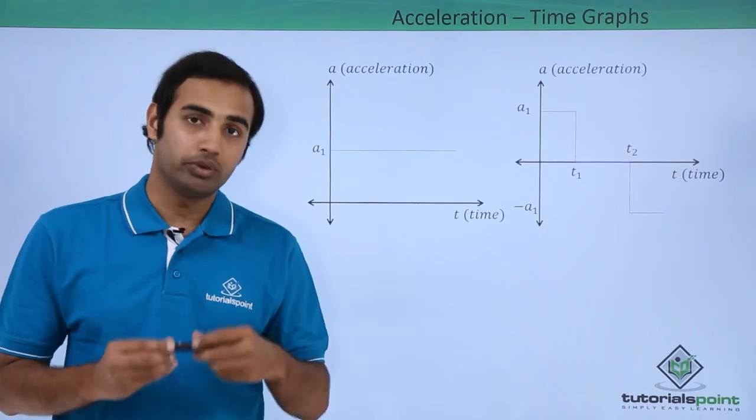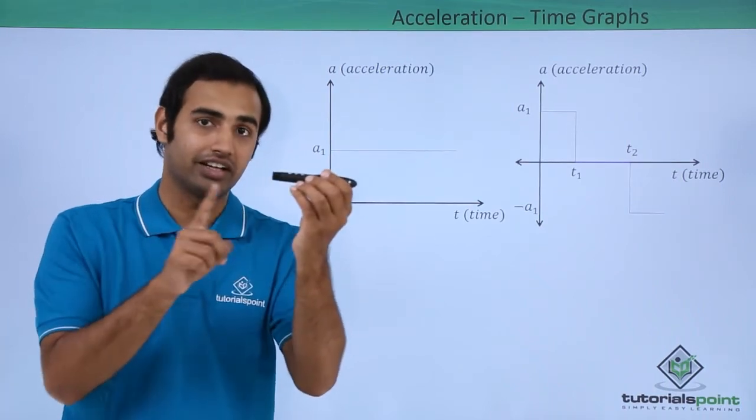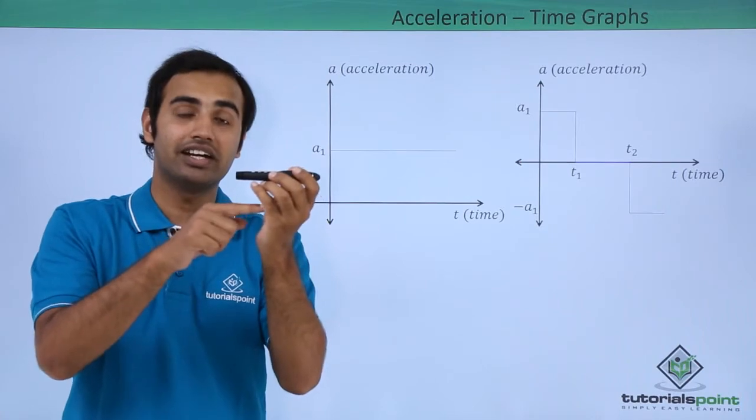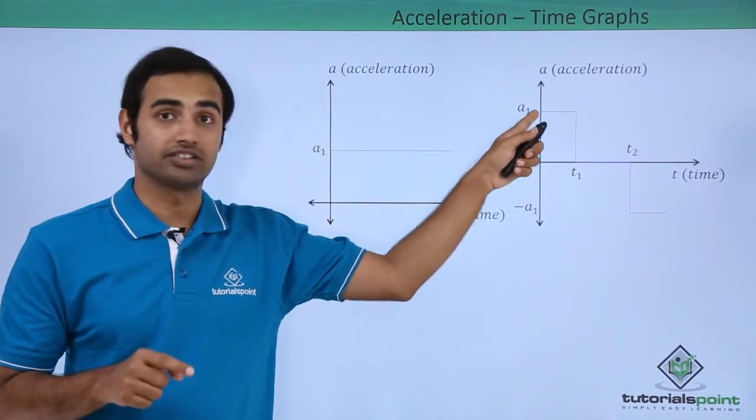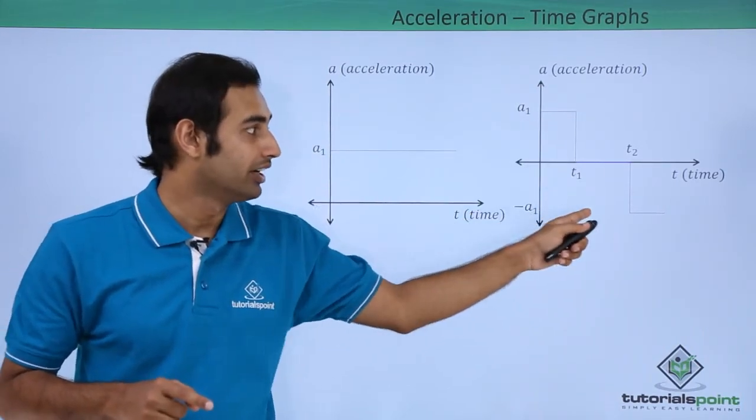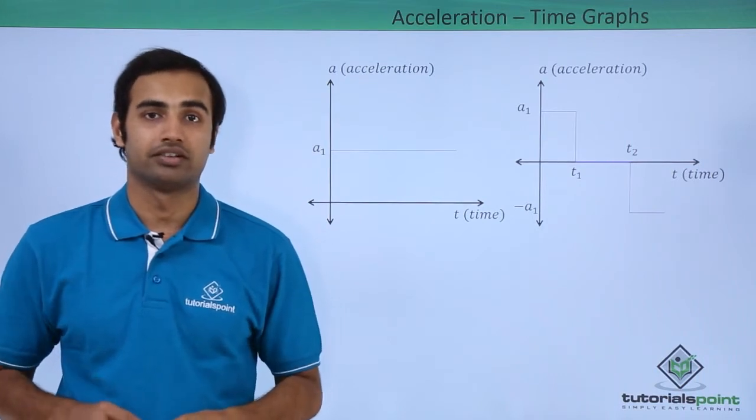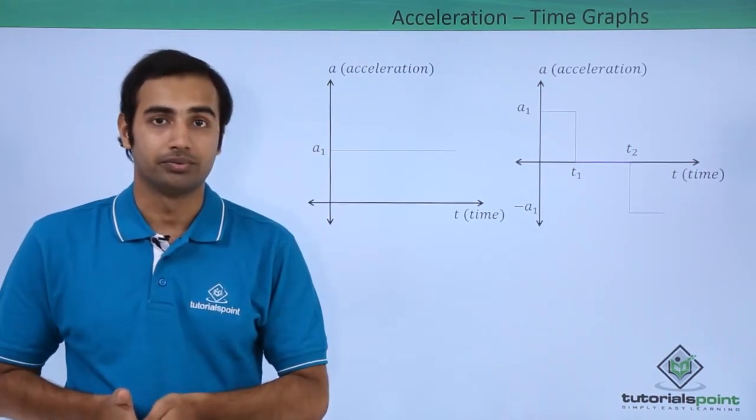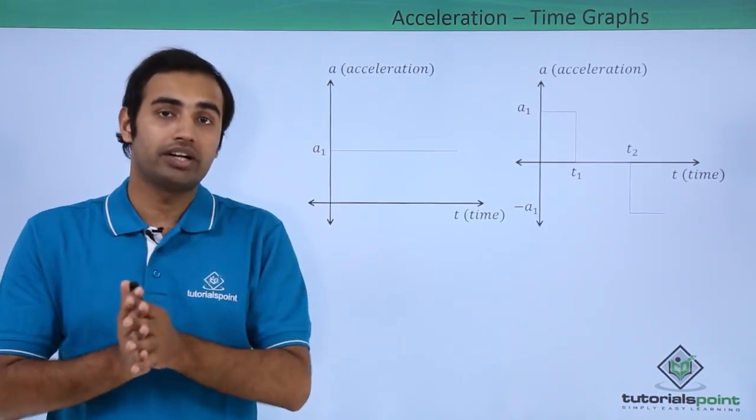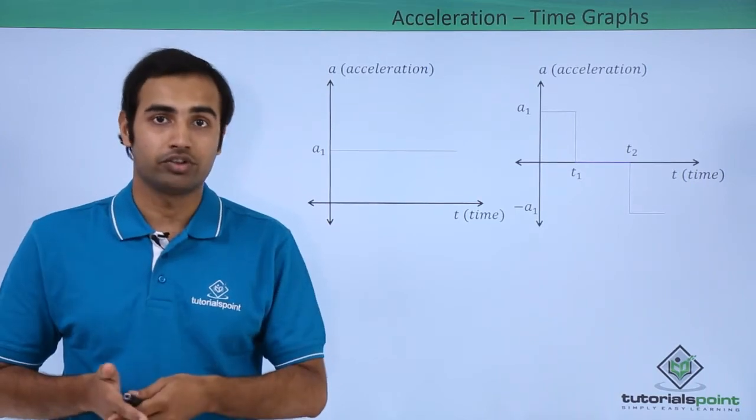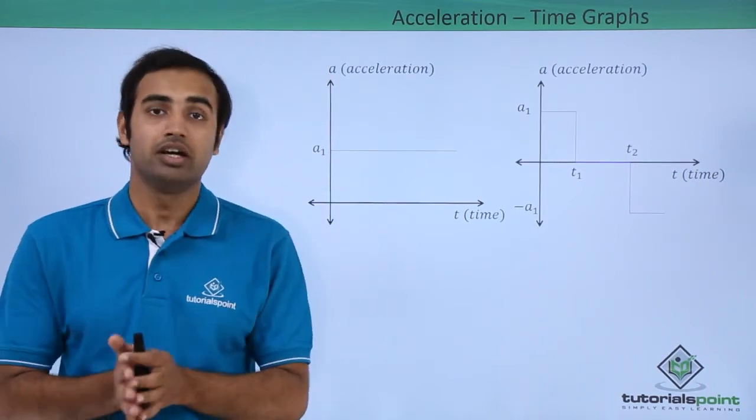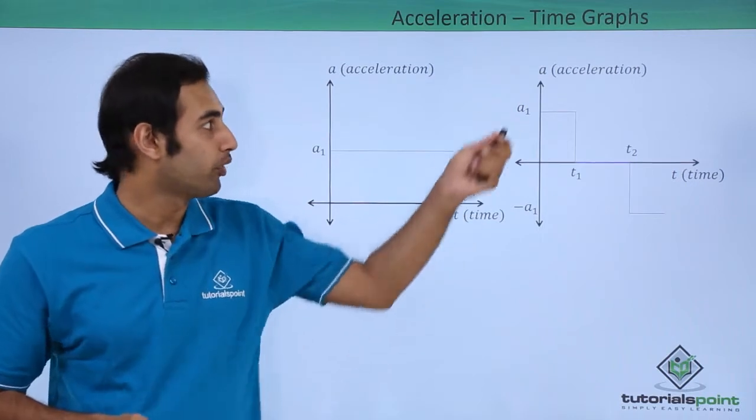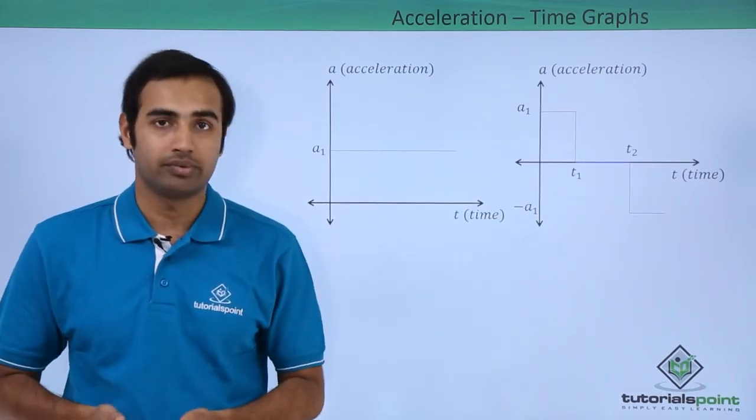However, if my original velocity is in the negative direction, then a positive acceleration will indicate deceleration in the first section, then constant velocity, and then acceleration in the last section. I hope this is very clear to you. So we cannot predict deceleration or acceleration of an object just by looking at an AT graph, but we can certainly talk about the positive and negative nature of acceleration from an AT graph.